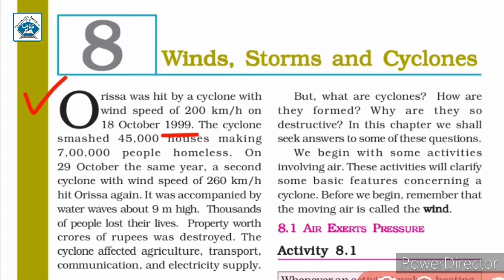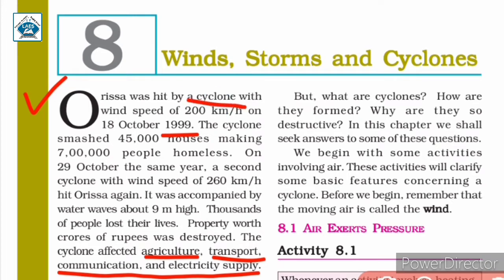The cyclone also affected agriculture, transport, communication and electricity supply. So we can say that a cyclone is a natural calamity which causes loss to human life and property.